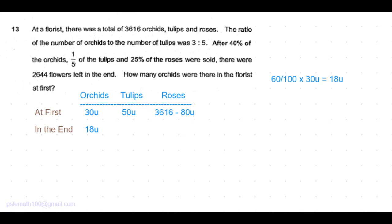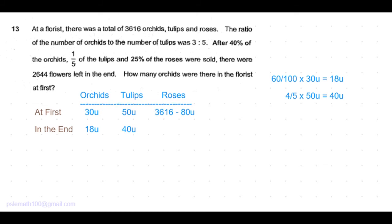One-fifth of the tulips were sold, which means four-fifths of the tulips were left. So four-fifths of 50 units is 40 units. So 40 units of tulips are left.